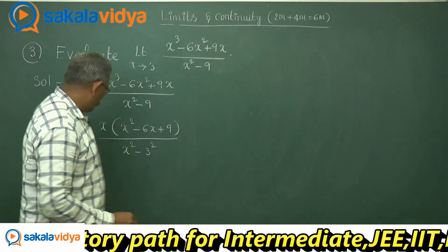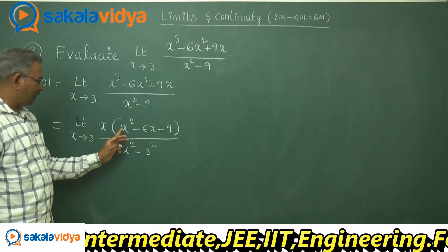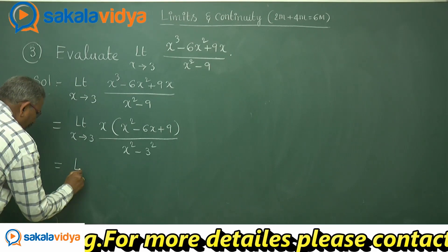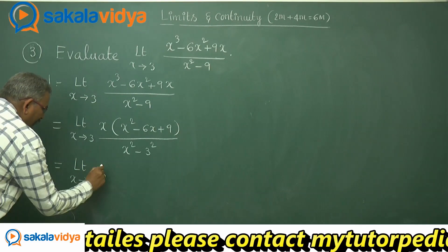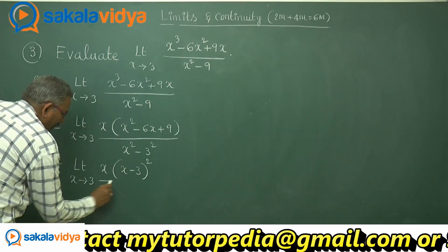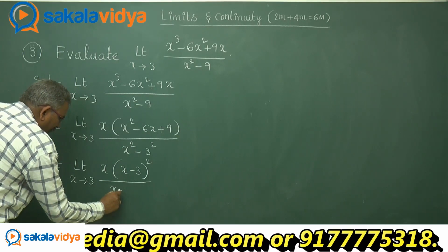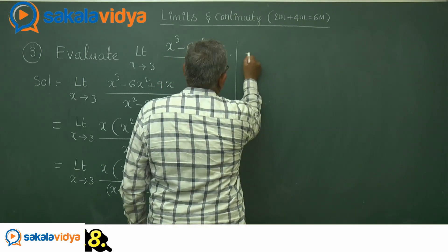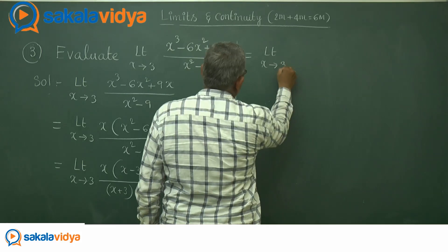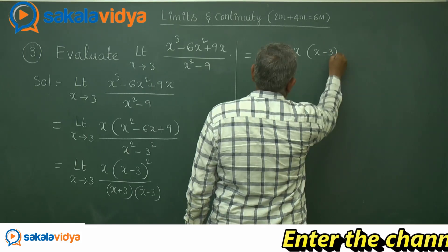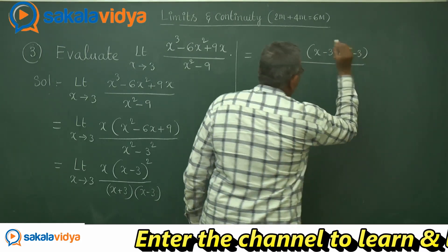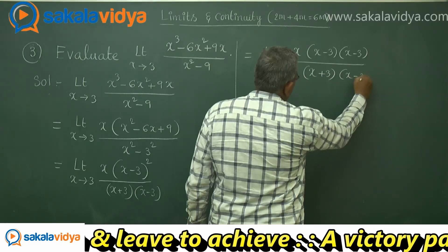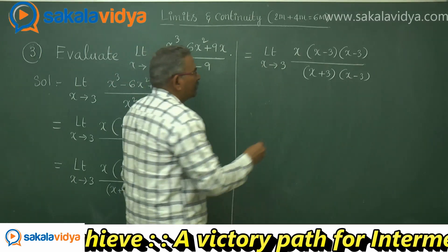Since a² - b² = (a + b)(a - b), the denominator becomes (x + 3)(x - 3). Now observe that x² - 6x + 9 is a perfect square, equal to (x - 3)². So we can write: limit x tends to 3 of x·(x - 3)² upon (x + 3)(x - 3). Expanding (x - 3)² as (x - 3)(x - 3), the common factors (x - 3) and (x - 3) get cancelled.